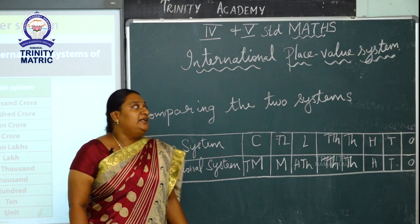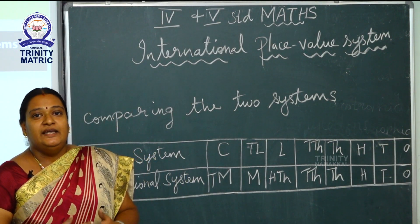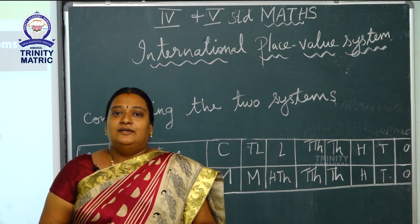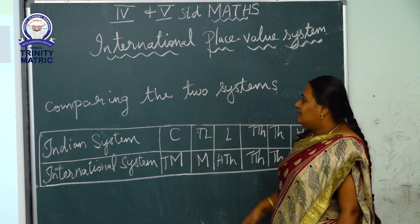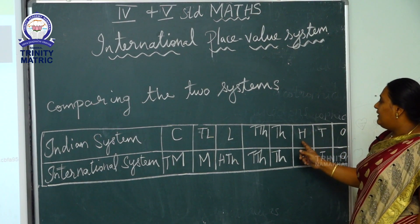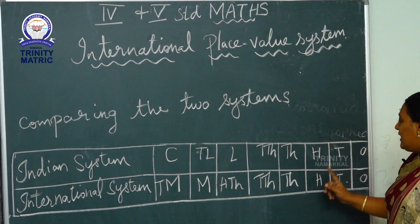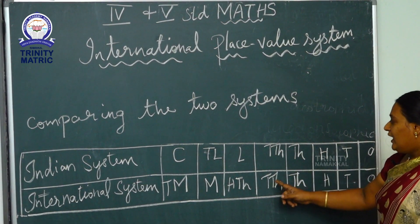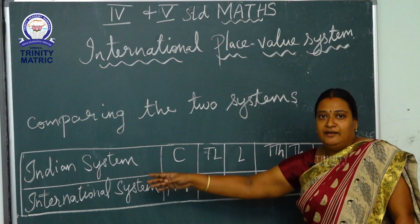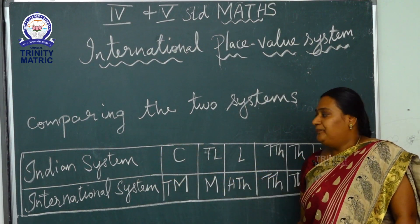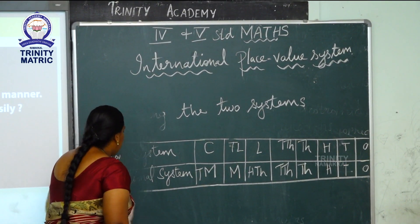Today we are going to see the international place value system. In India we use the Indian place value system, but worldwide they use the international place value system. In this system the periods and place values are slightly changed. In the Indian system we have ones, tens, hundreds, thousands, ten thousands, lakh, ten lakh, and crore. But in the international system we have ones, tens, hundreds, thousands, ten thousands, hundred thousands, then million, ten million, hundred million, then billion, then trillion.